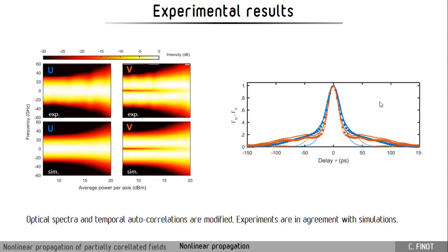What we first see is that the spectra of the fields that are recorded at the output - they are changed, they are impacted by the level of non-linearity, and they broaden when you increase the input power. The results are in excellent agreement with the numerical simulation based on the Manakov model. We can also see that the autocorrelation signals are also affected by the amount of non-linearity that we have.